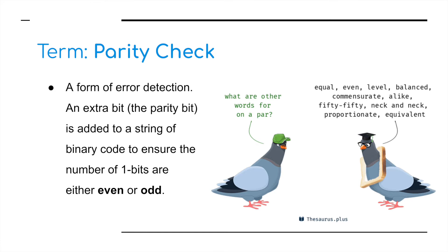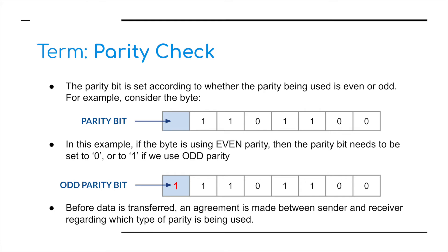So if we've got a string of bits, if a byte is using even parity then the parity bit needs to be set to zero, or in the case of odd, it needs to be set to a one. In the top example, if we're counting up the ones we've got four — that's an even number of ones, so we just have a zero. The bottom one, we're adding a one to give us five ones, which means it would be an odd number. It's as simple as that — odd numbers and even numbers.